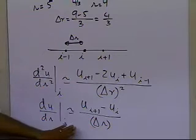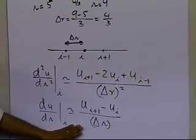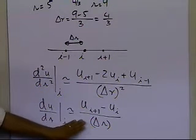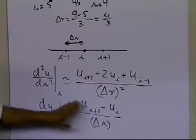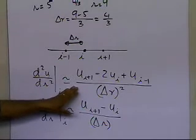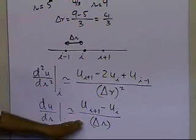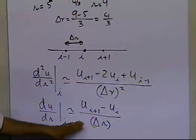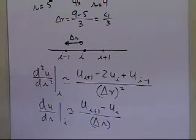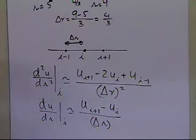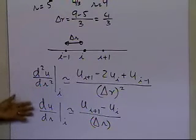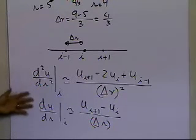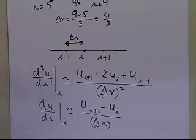This forward difference is not the best way to approximate the first derivative, because the order of accuracy here is delta r, whereas the central divided difference for the second derivative has accuracy of order delta r squared. So we'll look at how that makes a difference in examples. But for now, let's use this as our approximation.